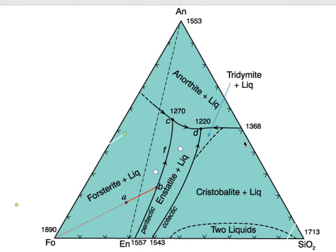In this ternary, we have a eutectic relationship between anorthite and cristobalite, and that eutectic occurs at 1368. There's a quasi-eutectic between anorthite and forsterite, but it's interrupted by the saturation of spinel, which is not shown here. That's why in this very nice diagram by John Winter, he is showing it as a dashed curve — it really splits off into a little spinel-plus-liquid field that we're going to ignore.